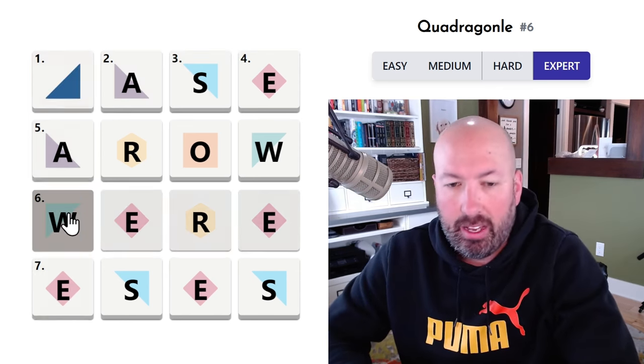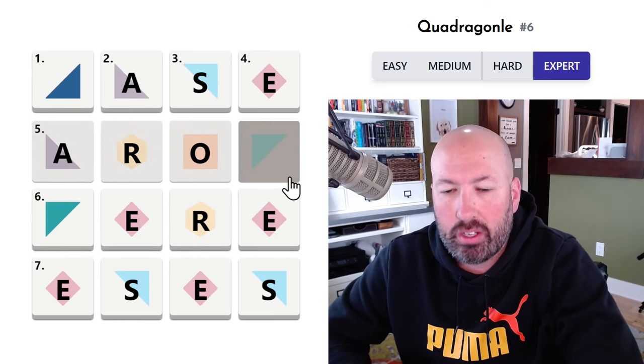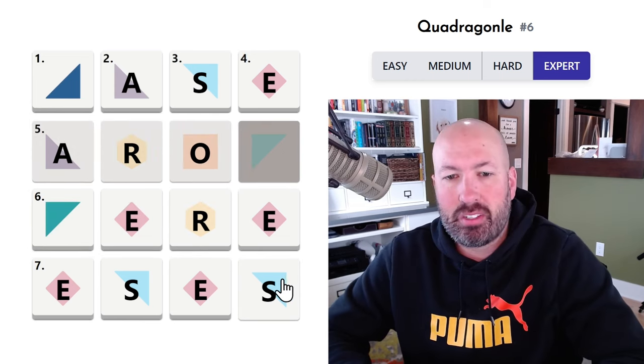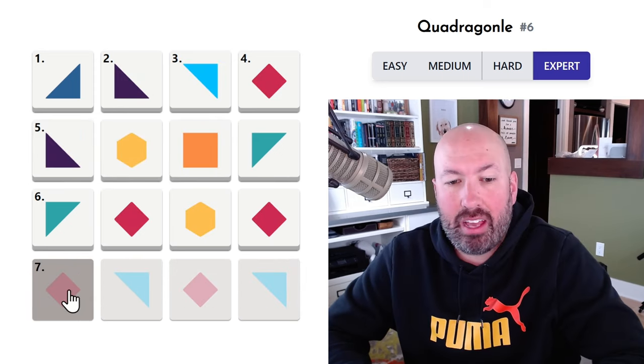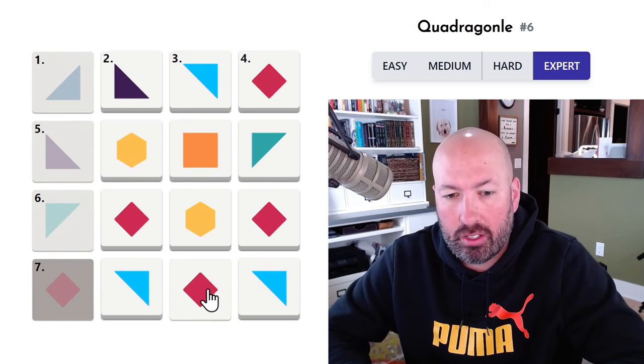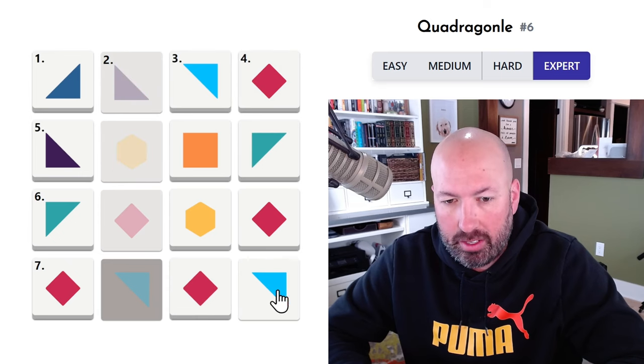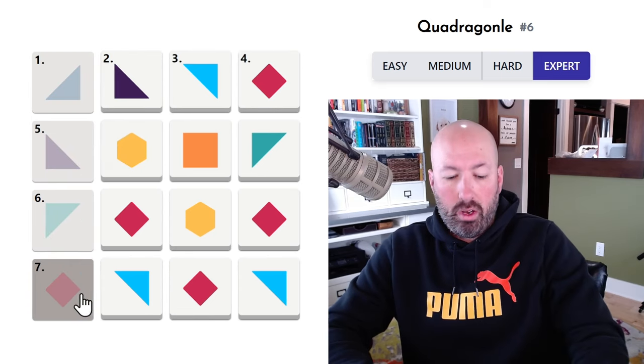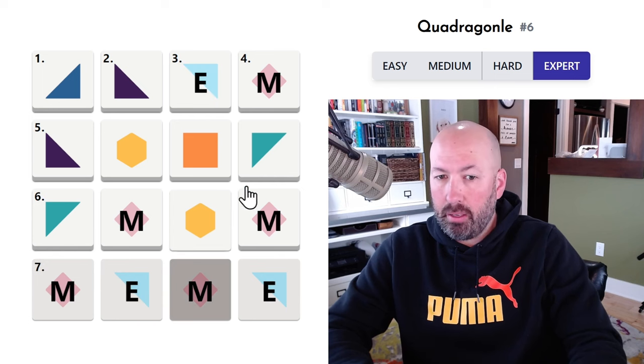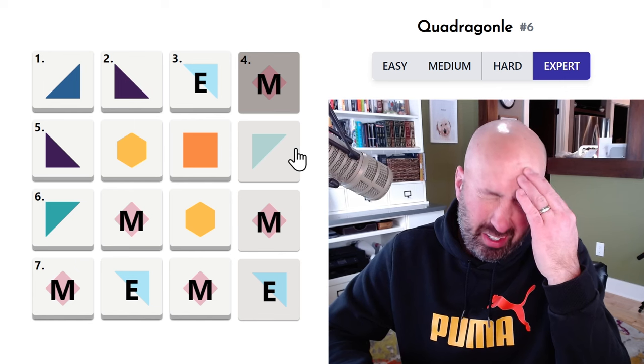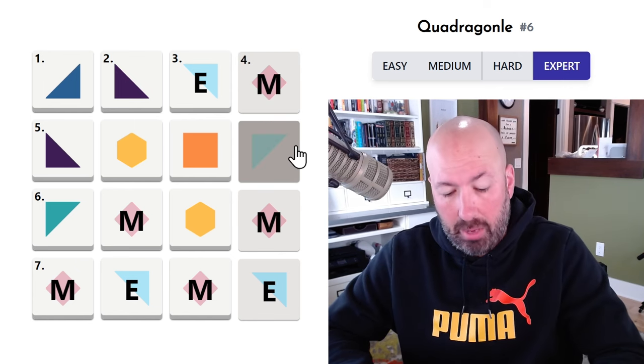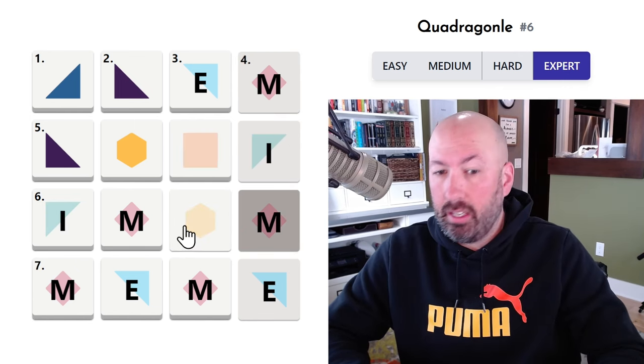And I can't think of any other words that have the vowel first and third with a, you know, the same letter second and fourth. What if we did meme and may, oh, that's M-A-I-M, isn't it? Mime, we could do mime. Imam. Ooh, now we're getting somewhere.